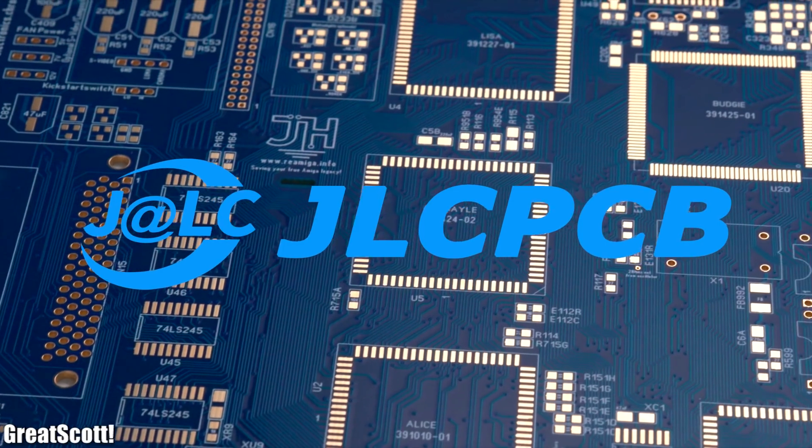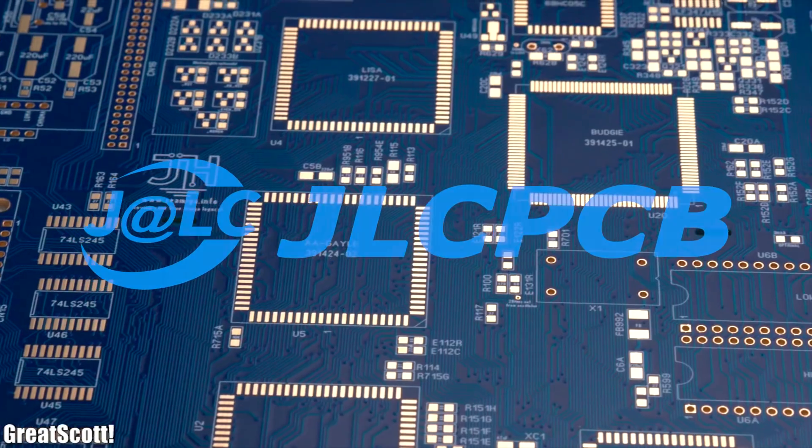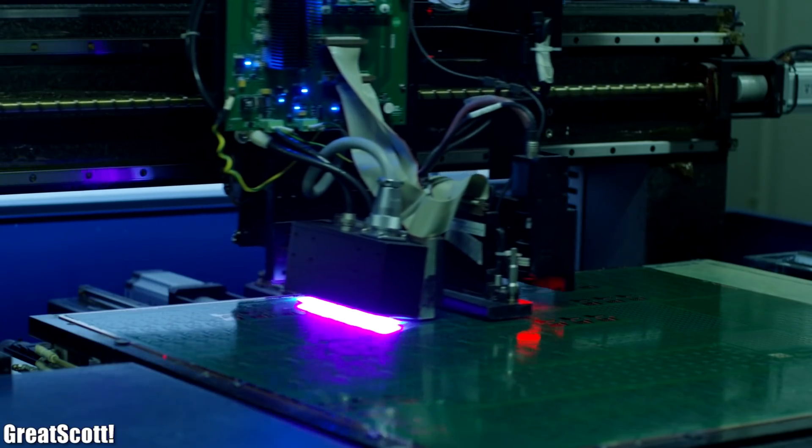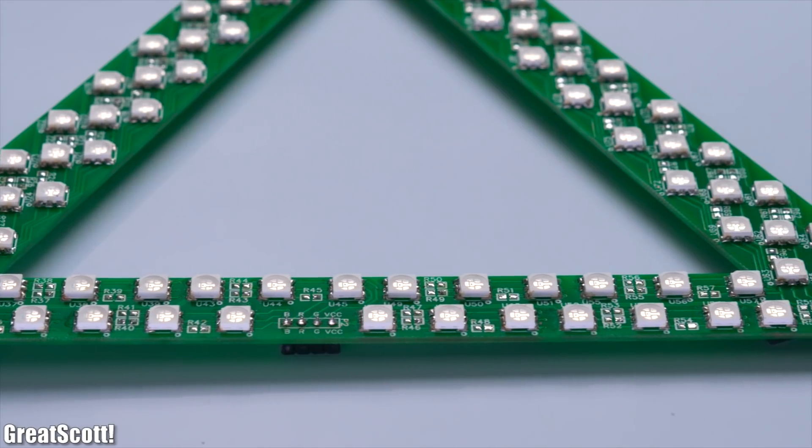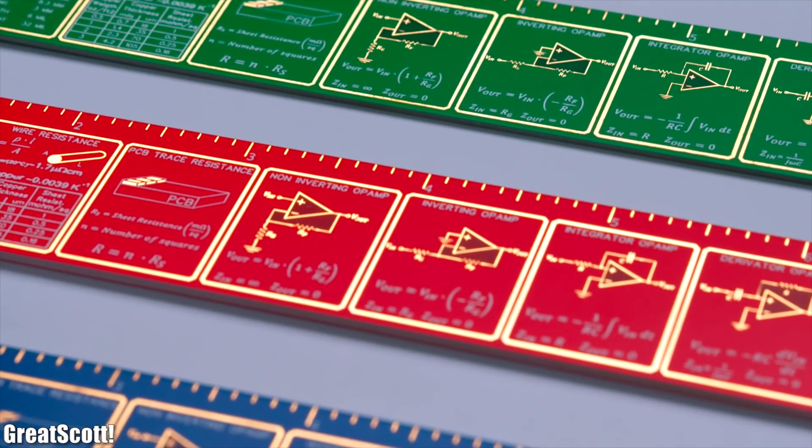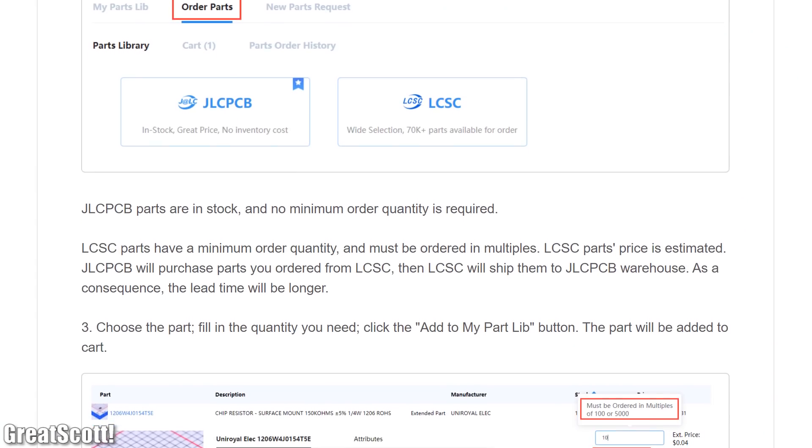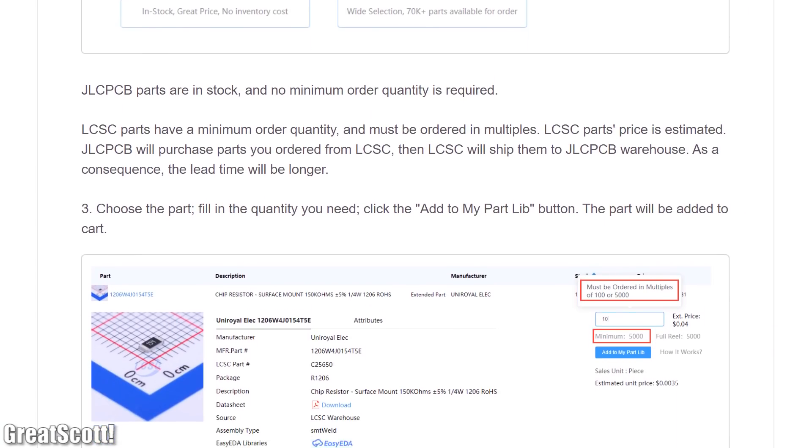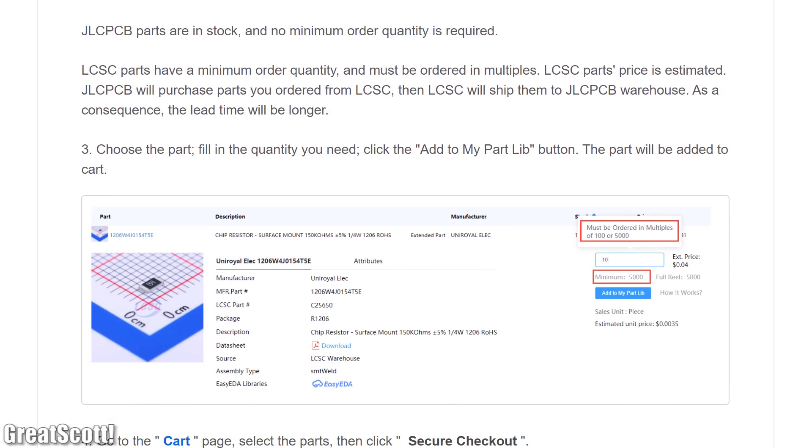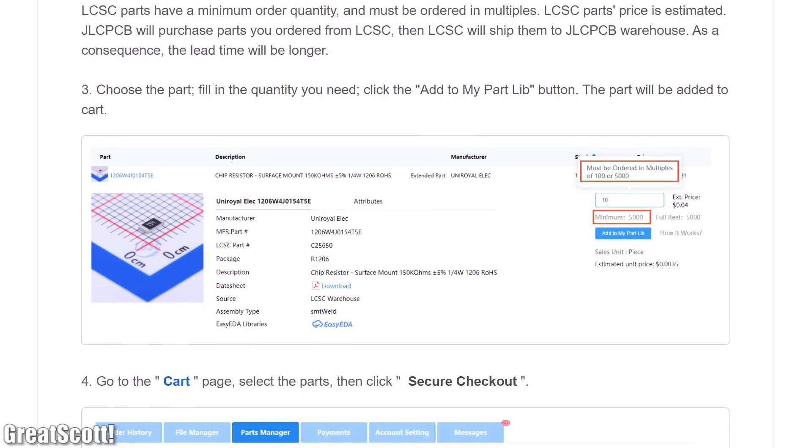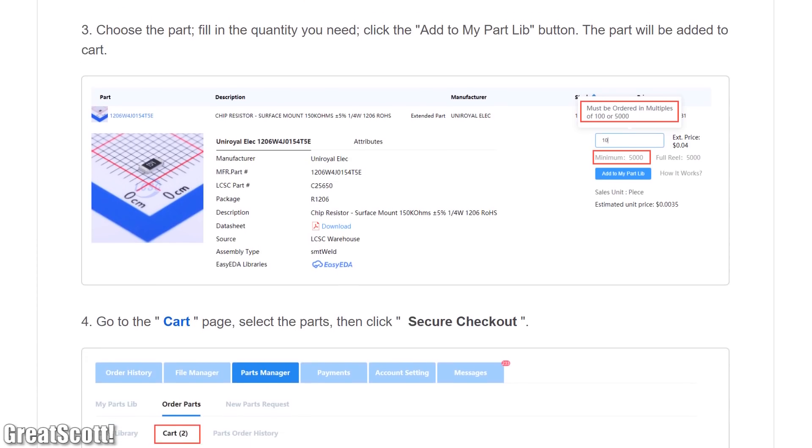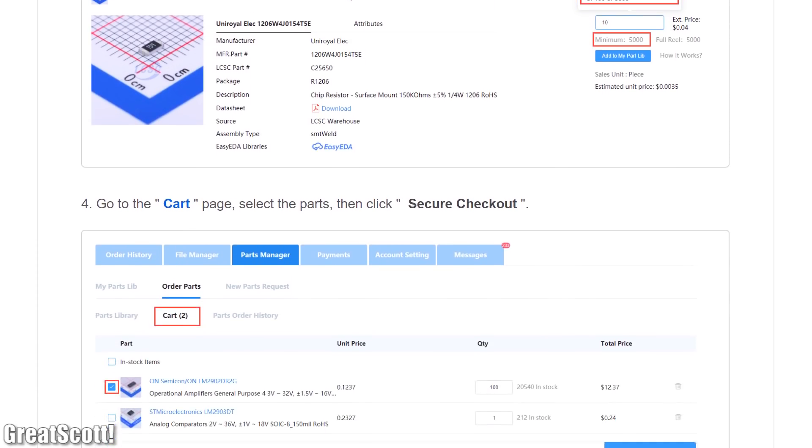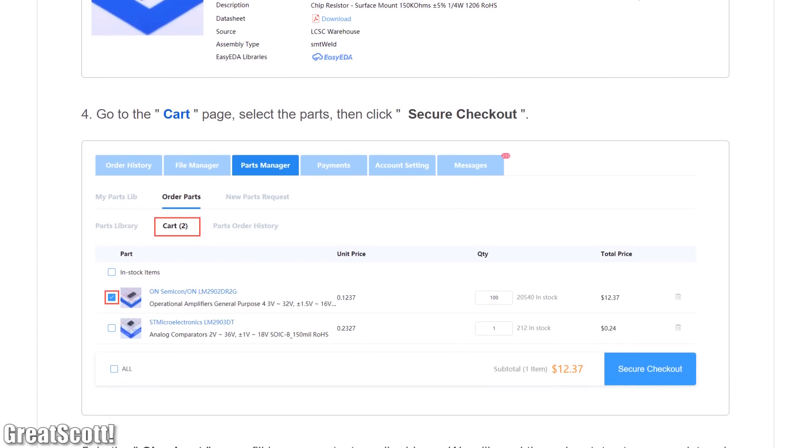This video is sponsored by JLCPCB which is a PCB manufacturer that I can highly recommend. And today I want to present to you one of their new features, the pre-order parts feature. It allows you to order the SMT components for your boards before doing the SMT assembly PCB order. This way you will not run into the problem that there are not enough components available for your design. But feel free to check out JLCPCB on your own to learn more.